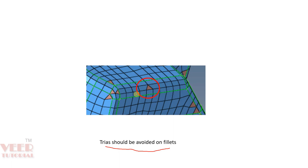Here we can see on this fillet there is a tria, and we need to avoid trias on the fillet area because fillet areas are critical areas — generally these are areas where the stress is very high due to stress concentration. When we put a tria on the fillet, it will not give us a good result.